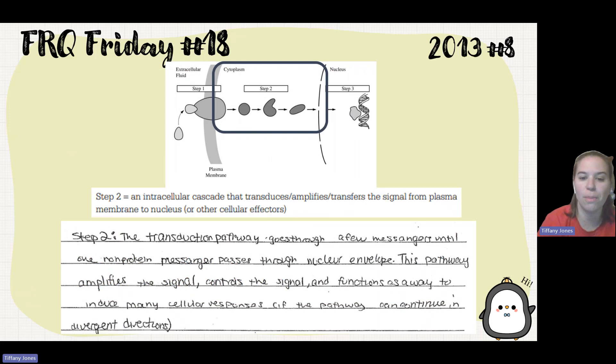So step two, the transduction pathway goes through a few messengers until one non-protein messenger passes through the nuclear envelope. This pathway amplifies the signal, controls the signal, and functions as a way to induce many cellular responses that the pathway can continue in divergent directions.